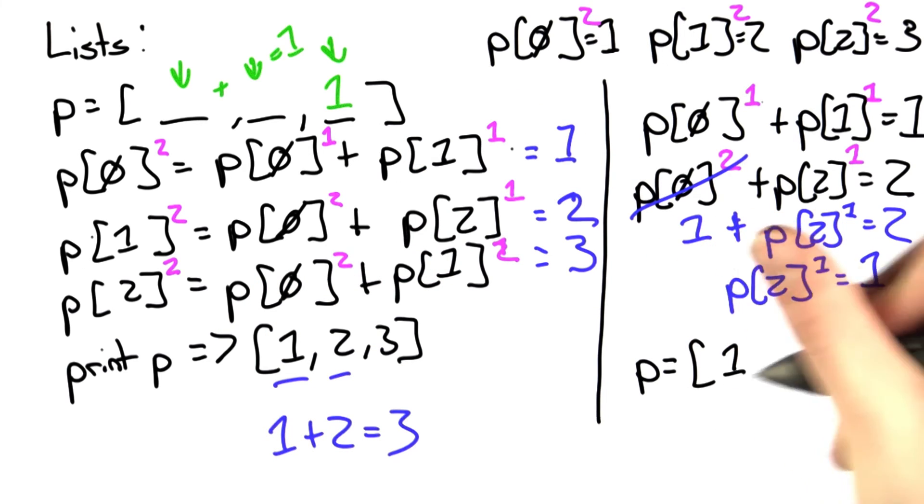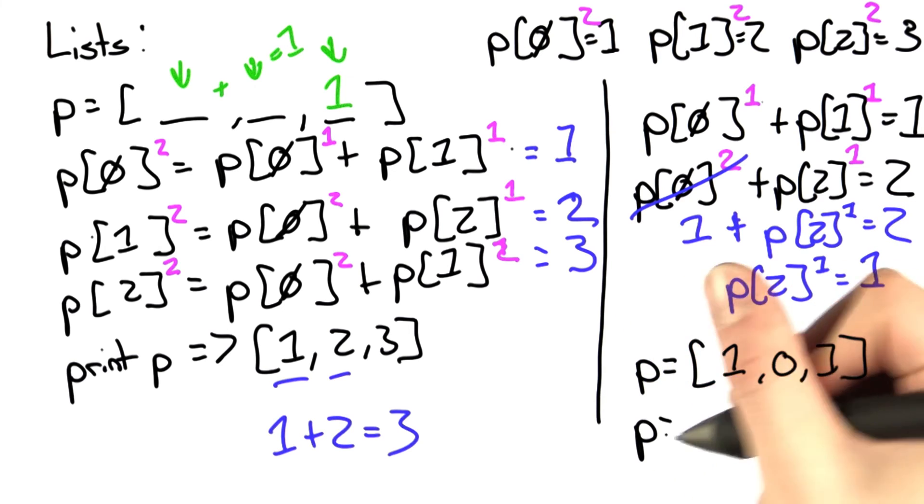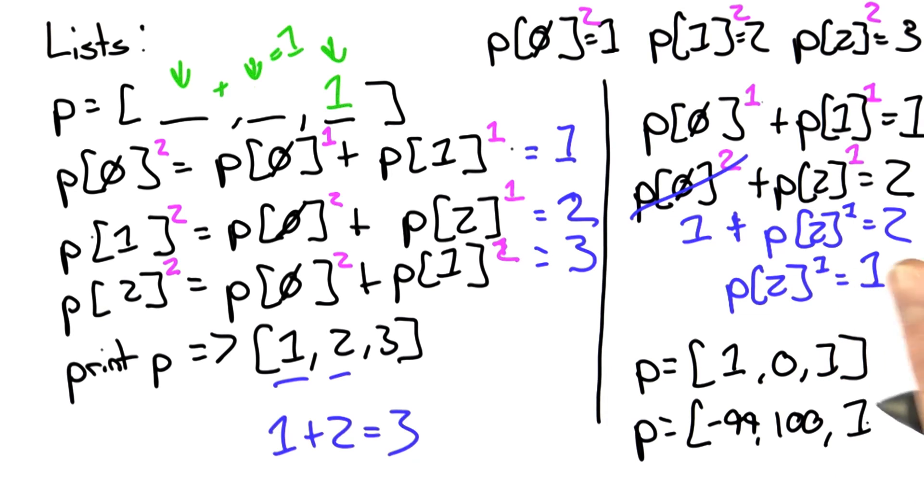So two sample solutions would be 1, 0, 1, and an equally valid one is negative 99, 100, and 1.